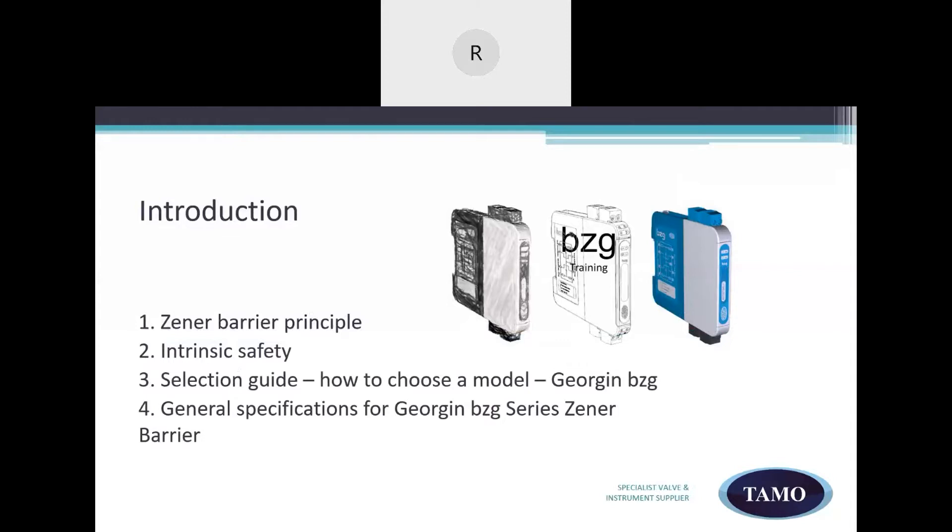We'll look at where they're placed within the intrinsically safe system and what we require to validate and verify the loop calculation. We'll also look at selecting Zeno barrier using the Georgian selection guide complete with reference examples for multiple applications. We'll finish off the webinar with a questions and answers session.